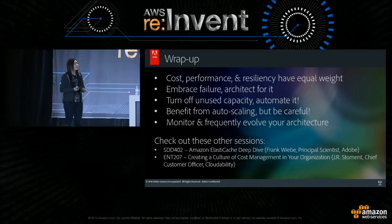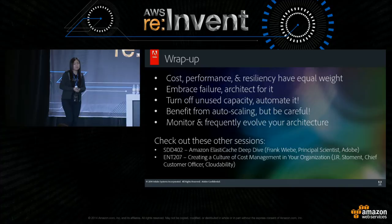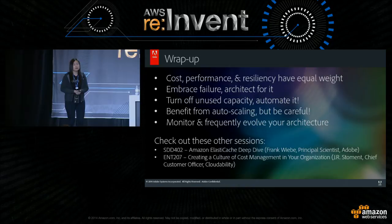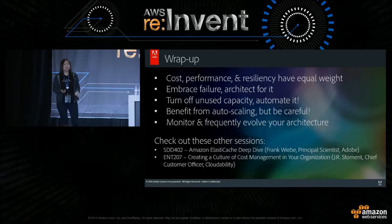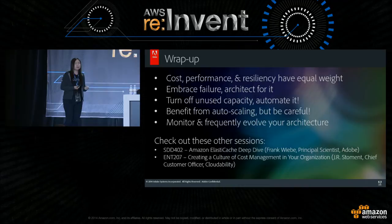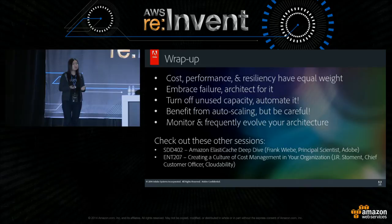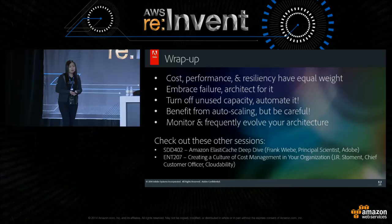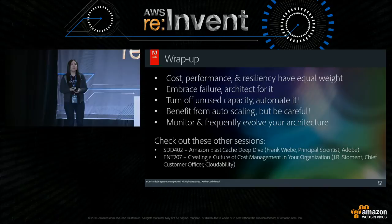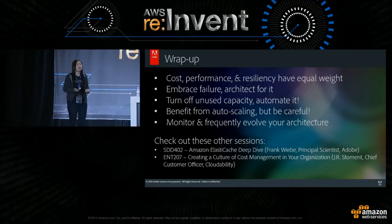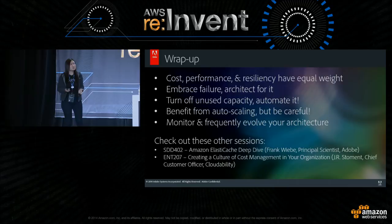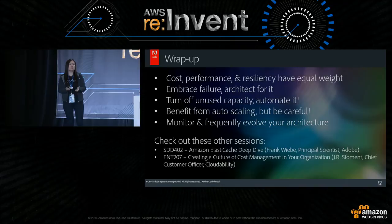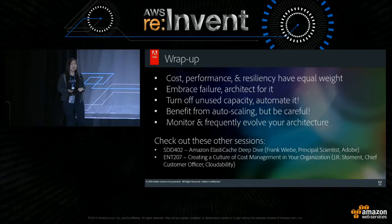To recap: we talked about cost, performance, and resiliency having equal weight — evaluate all of them when selecting an instance type. Embrace failure because it's going to occur; plan and design for it. Turn off unused instances and automate it — it's like a light switch. When you walk out of a room, you turn off the lights — do the same with compute infrastructure. Autoscaling is very powerful, but use it wisely and test it to make sure it gives you the behavior you expect. Monitor and frequently evolve your architecture. Amazon gives you the ability to iterate as many times as you need until you get it right, so take advantage of it. Amazon has built these building blocks — it's up to us to put them together to maximize efficiency and cost savings.